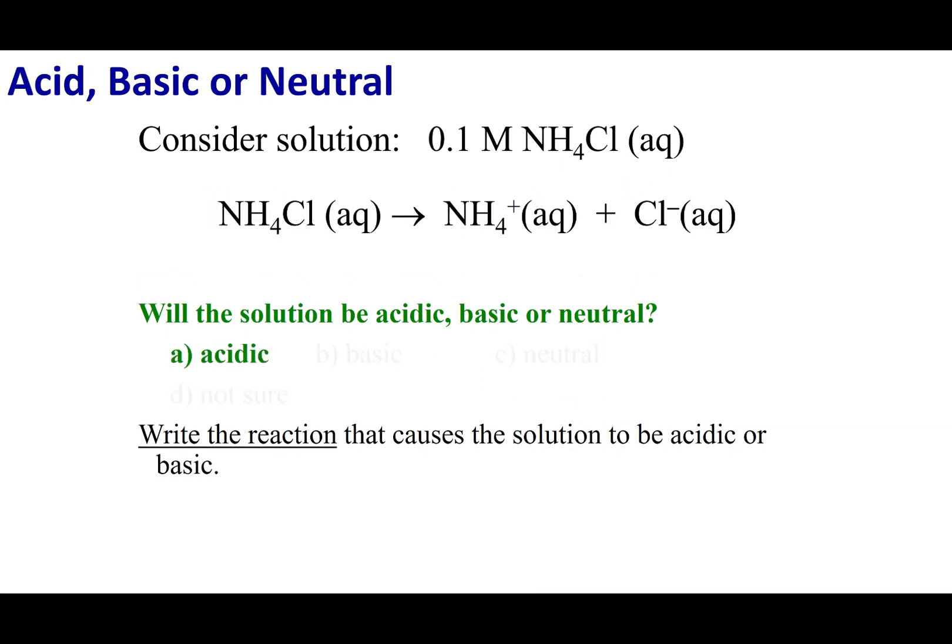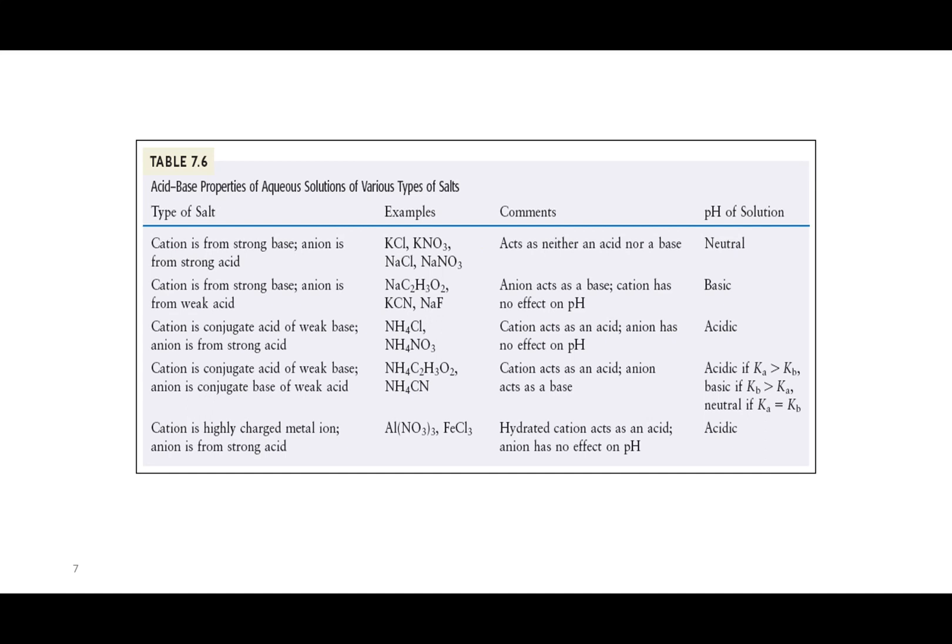So another way that we can do these types of problems is we can look at our Ka table. If the ions make an acid that appears on that table, then what you can say is it is going to be acidic. However, if we look and we see that it makes anions and that anion is the conjugate base of a weak acid, then it is going to make the solution basic. So all of this is summarized in table 7.6. It is going to tell you if you're going to make a solution that is neutral, basic or acidic based on the ions of the salt.